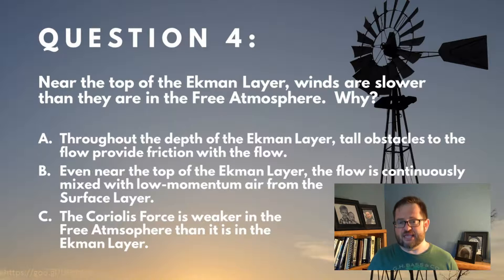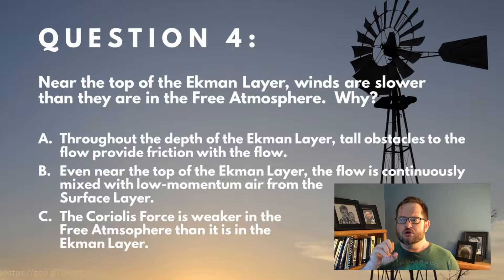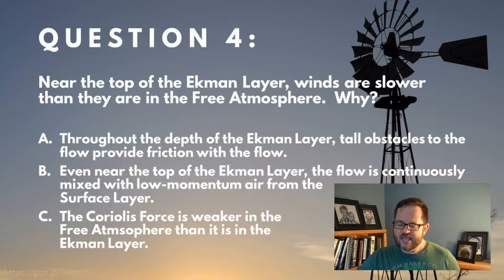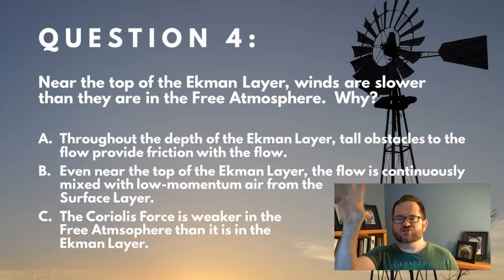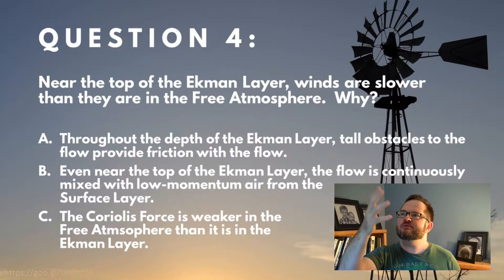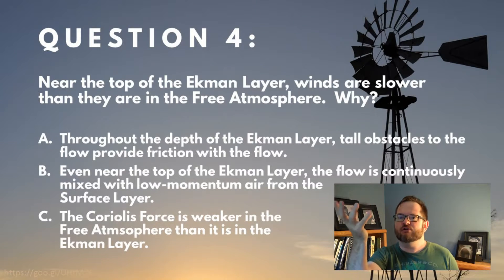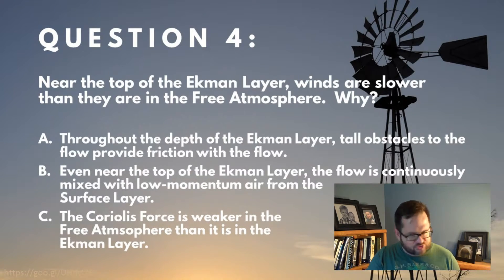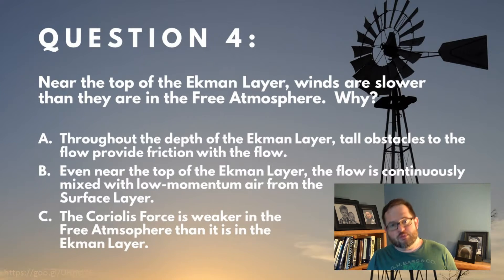The right answer I was looking for here is B. I wanted you to understand that the reason why winds in the Ekman layer are less than geostrophic, or sub-geostrophic, is that very low velocity air from down near the surface of the Earth, with very low momentum, gets lifted up in thermal updrafts under well-mixed conditions. Once it's up there in the Ekman layer, this low velocity air gets mixed with the higher velocity air around it, and you get an overall reduction in momentum, kinetic energy, or speed — just because we've taken air from the surface that was slow and brought it up there.